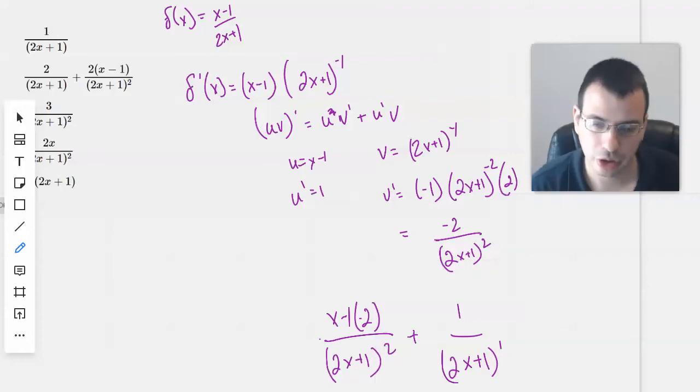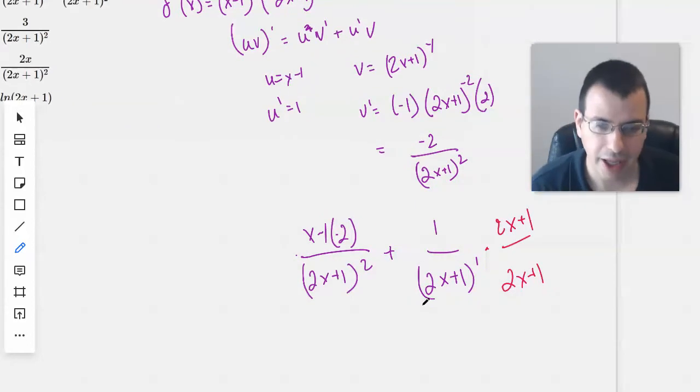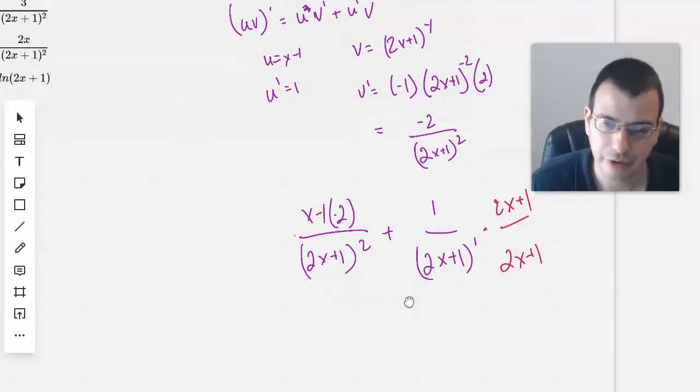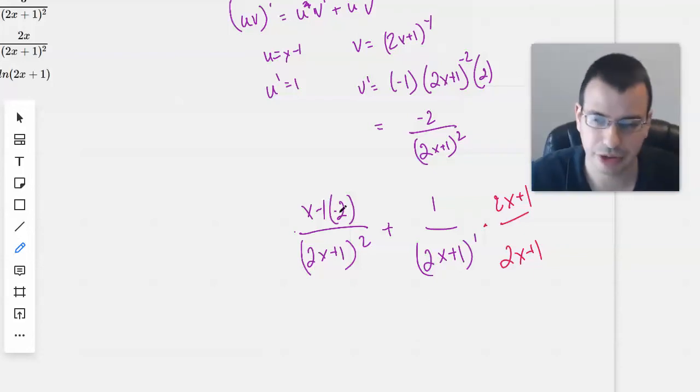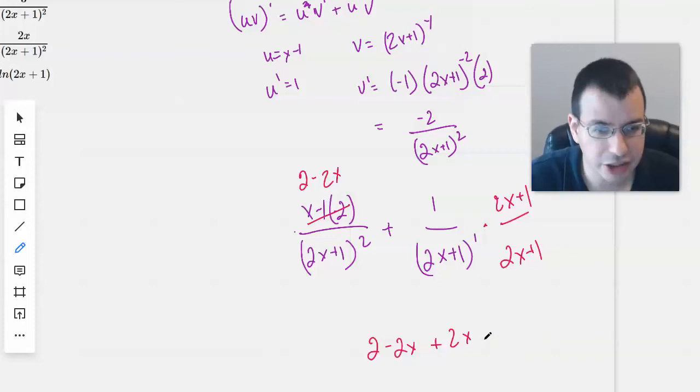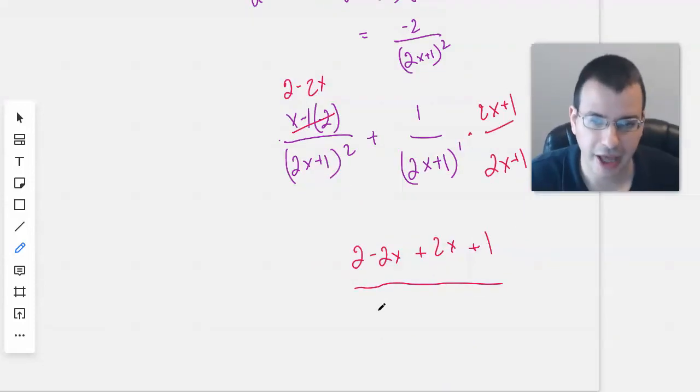And then what we'll do is multiply the top and the bottom by 2x plus 1, and that way we'll be able to combine the denominators. We'll find a common denominator so we can combine the numerators. And I'll do this as 2 minus 2x, just distribute. So we have 2 minus 2x plus 2x plus 1, combine those up top. And then we have 2x plus 1 on the bottom squared.